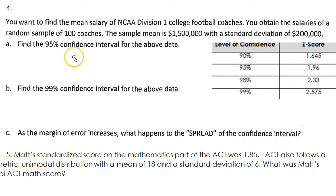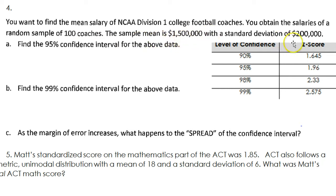Looking at number four: you want to find the mean salary for NCAA Division I college football coaches. You obtain the salaries of a random sample of 100 coaches. The sample mean is 1,500,000 with a standard deviation of 200,000. Find the 95% confidence interval for the above data.